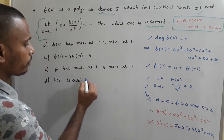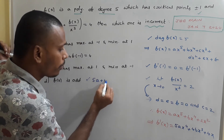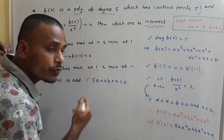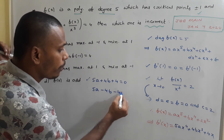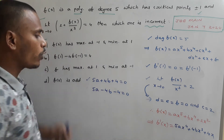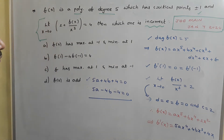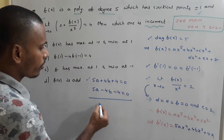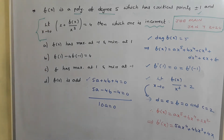Wait — c = 2 means the term is 2x³, so the derivative of 2x³ is 6x², not 4x. So f'(x) = 5ax⁴ + 4bx³ + 6x². Using f'(1) = 0: 5a + 4b + 6 = 0. Using f'(−1) = 0: 5a − 4b + 6 = 0. Adding these two equations: 10a + 12 = 0, so a = −6/5.